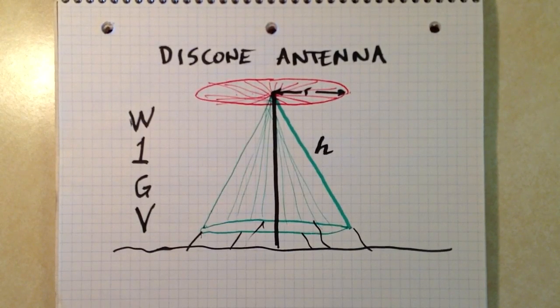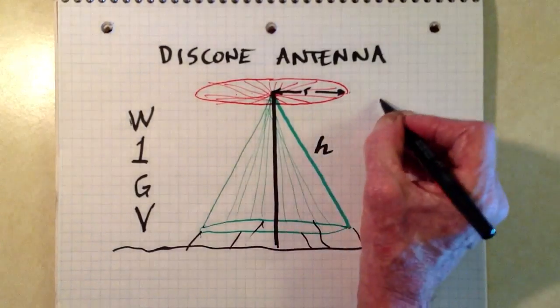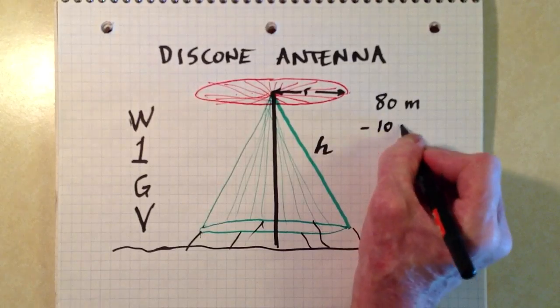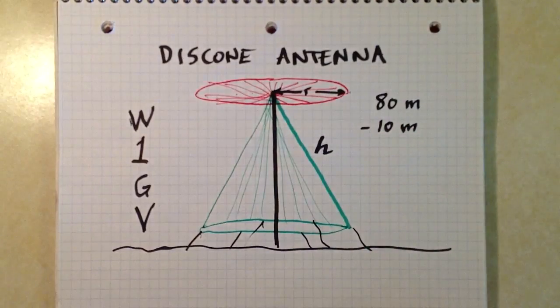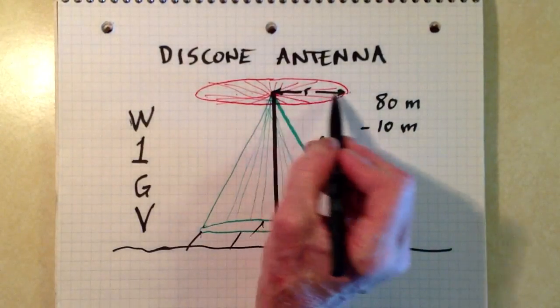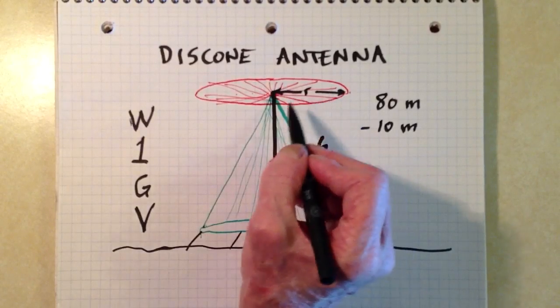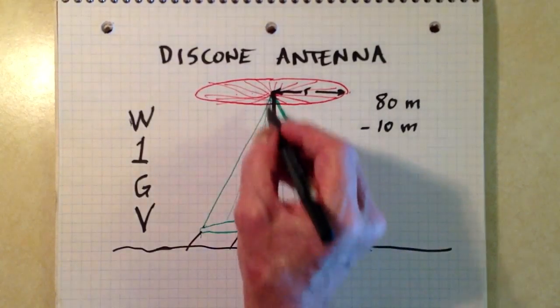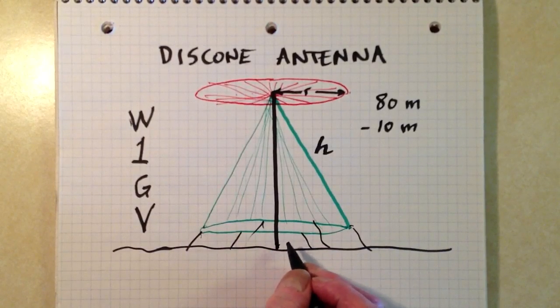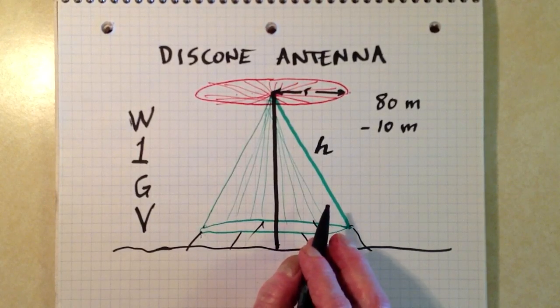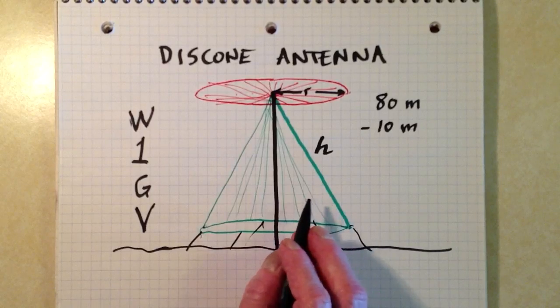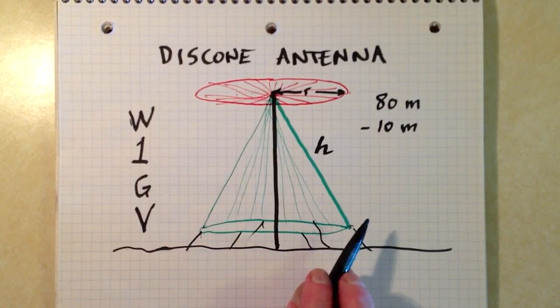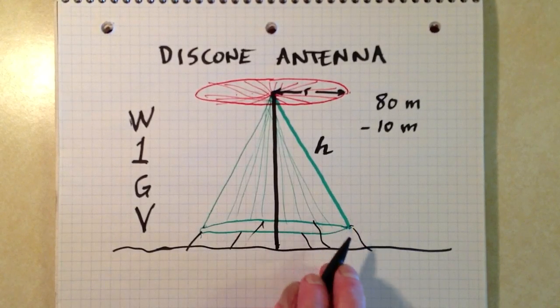And just to give you an idea of these dimensions, if you want this thing to work on 80 meters and up, or 80 meters through 10 meters, you would have to make this radius 23 feet 1 inch, and the slant height 69 feet 6 inches, and the mast would have to be about 65 feet high. That's pretty imposing structure. You make this thing out of wire mesh, just as you would with a conical monopole.